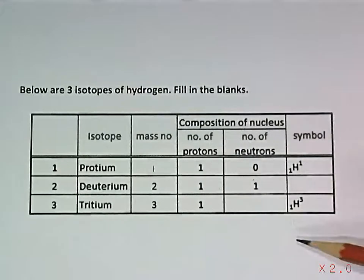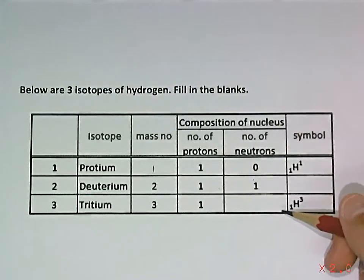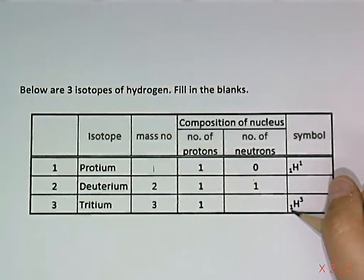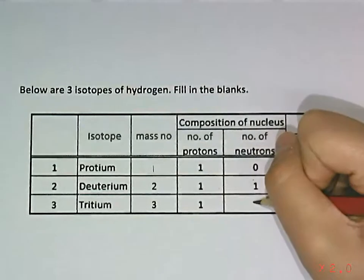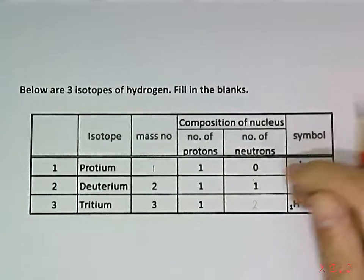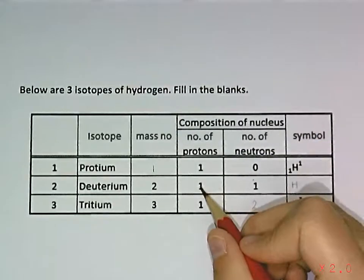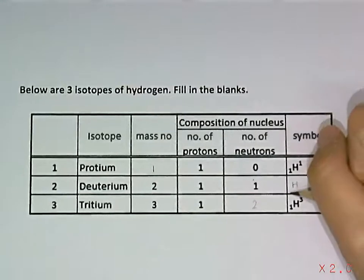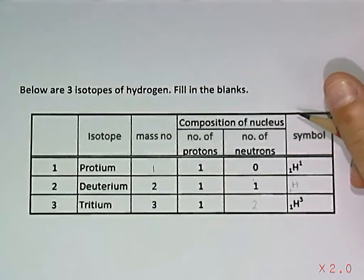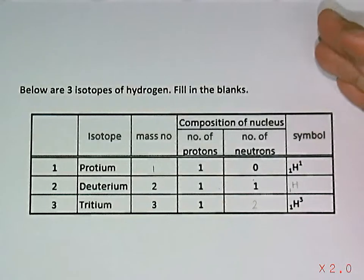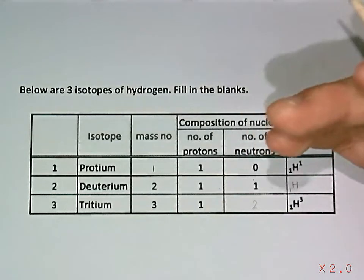And over here, what is the number of neutrons? It's simple. What you just have to do is take the relative atomic mass and subtract the proton number. So 3 minus 1, you get 2. And then for this one, the symbol — it's hydrogen, so it's H, because it has the proton number 1. And each element will have its own number of protons.